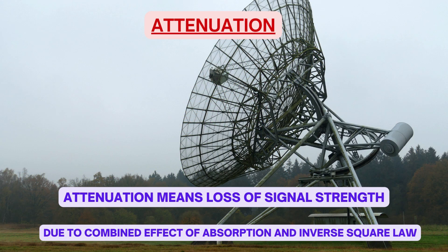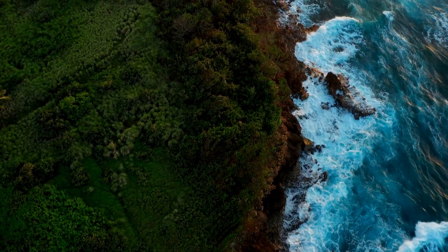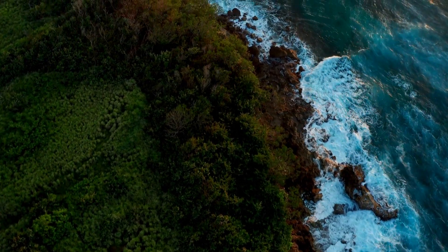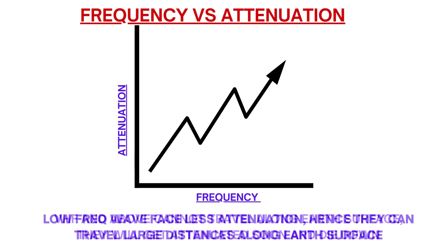Attenuation simply means loss of signal strength. Soil, ground, vegetation, and water bodies all attenuate radio waves. For surface waves which travel along the surface of the earth, higher the frequency, higher the attenuation. So VHF and above cannot travel along the earth's surface — they get attenuated soon and die down. Low frequency waves face less attenuation, and hence they can travel large distances along the earth's surface.